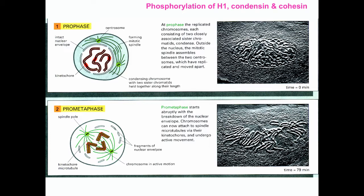Outside of the nucleus, the mitotic spindle begins to assemble between the centrosomes which have replicated and have begun to move apart. This assembly depends on phosphorylation of microtubular associated proteins at the microtubular organizing center.